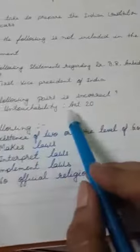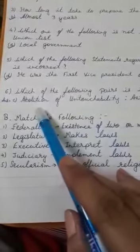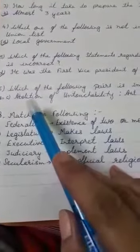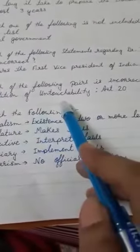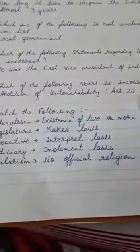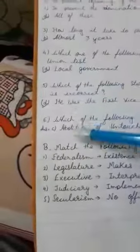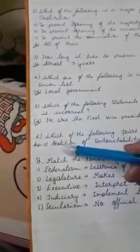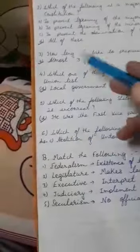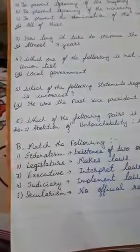The sixth question: which of the following pair is incorrect? The answer will be C. I am directly writing only the answer option, and you have to write it like this.